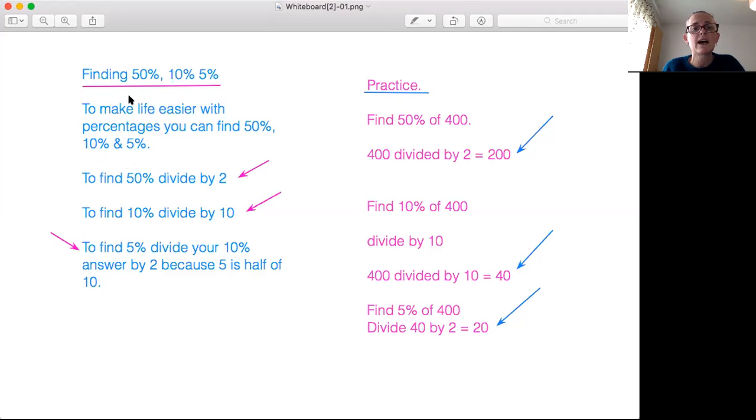So let's just work out how to find 50%, 10% and 5%. To find 50% we divide by two and here we have a practice question on the right in pink: find 50% of 400. So 400 divided by two equals 200 because 50% is a half and so half of anything you divide by two.